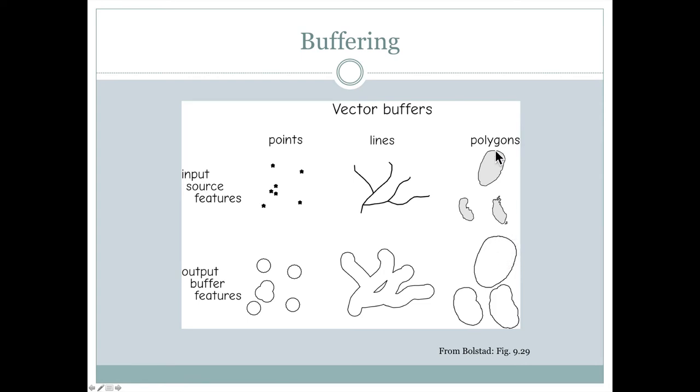Because buffers are often used to describe something within a certain distance of something else, in this case, the polygons themselves are included in the buffer. Other times, a little empty area like a donut is left in the middle, and that's when the polygon would not be included. If you wanted to know where a certain distance from a polygon was, but you did not want to include the polygon itself.